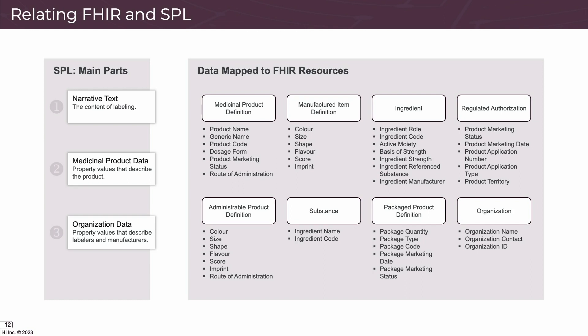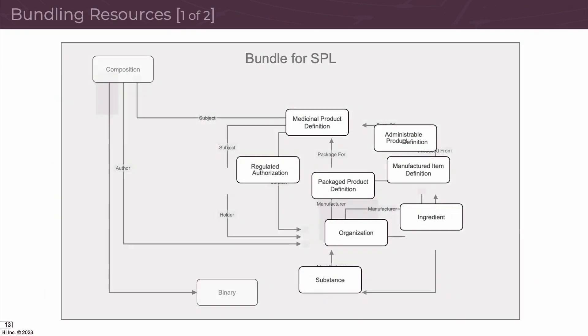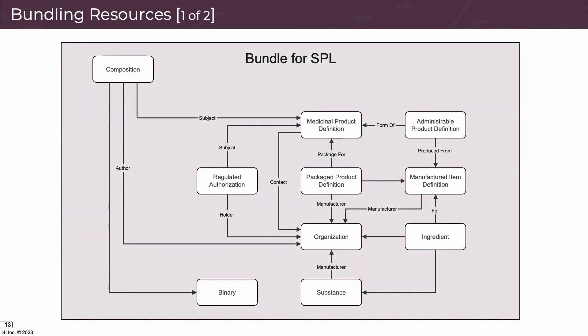A full EPI would have what's called the composition resource as the first one. The composition resource is analogous to the SPL content, and kind of like SPL, the content is attached to images, the organization, and the medicinal product definition. The images are called binaries in FHIR, and just like with SPL files, the images are held separately from the content — in FHIR they're held in resources as binary data rather than actual JPEG files.